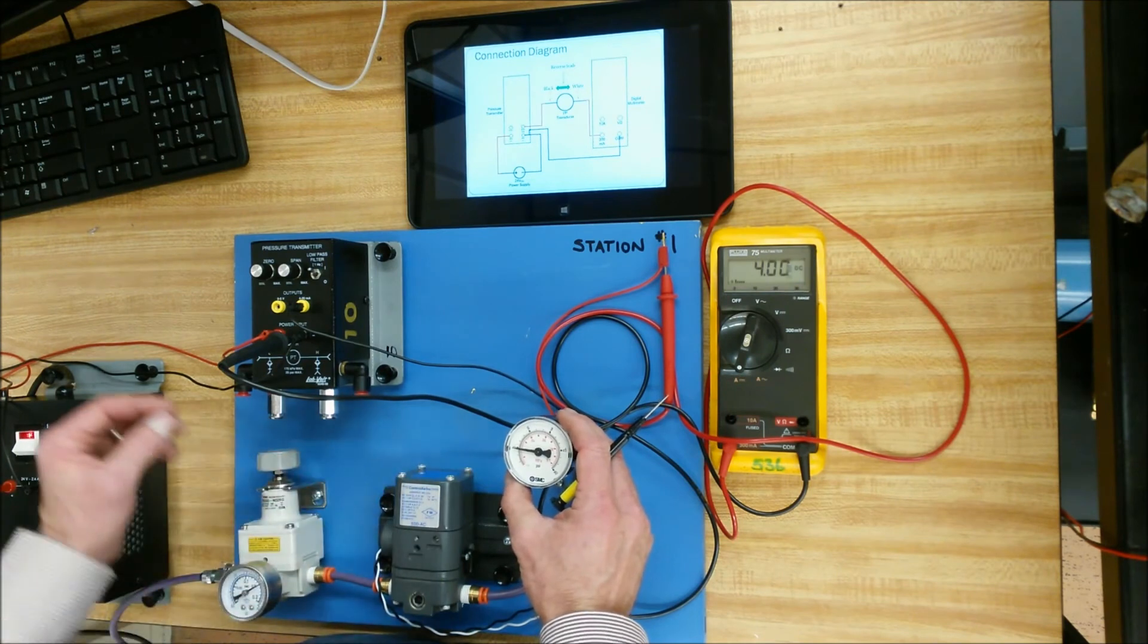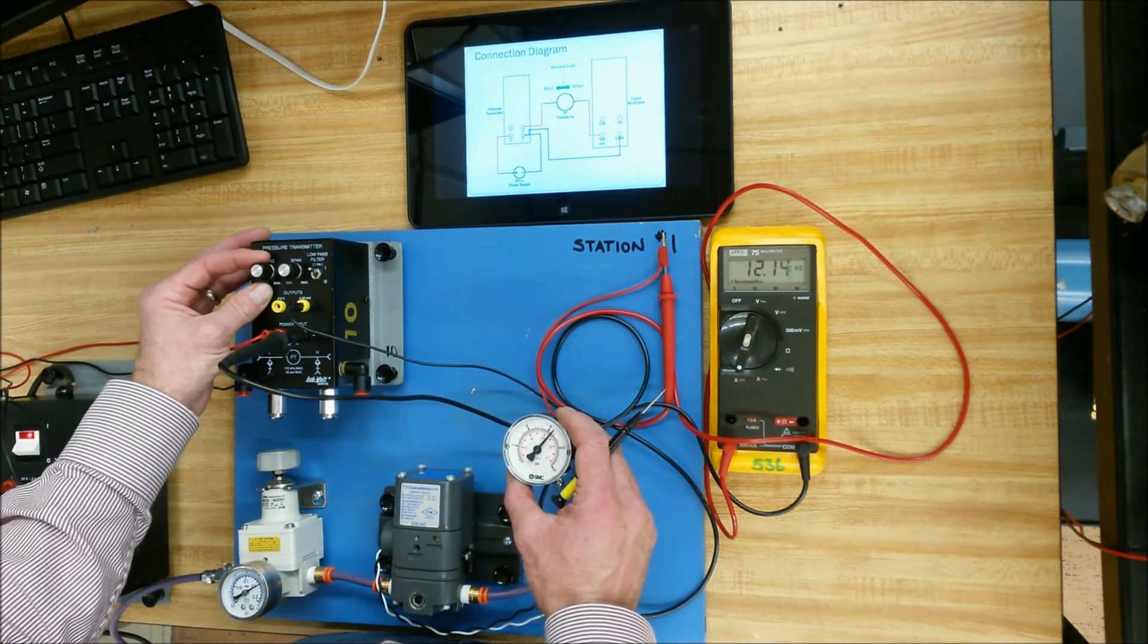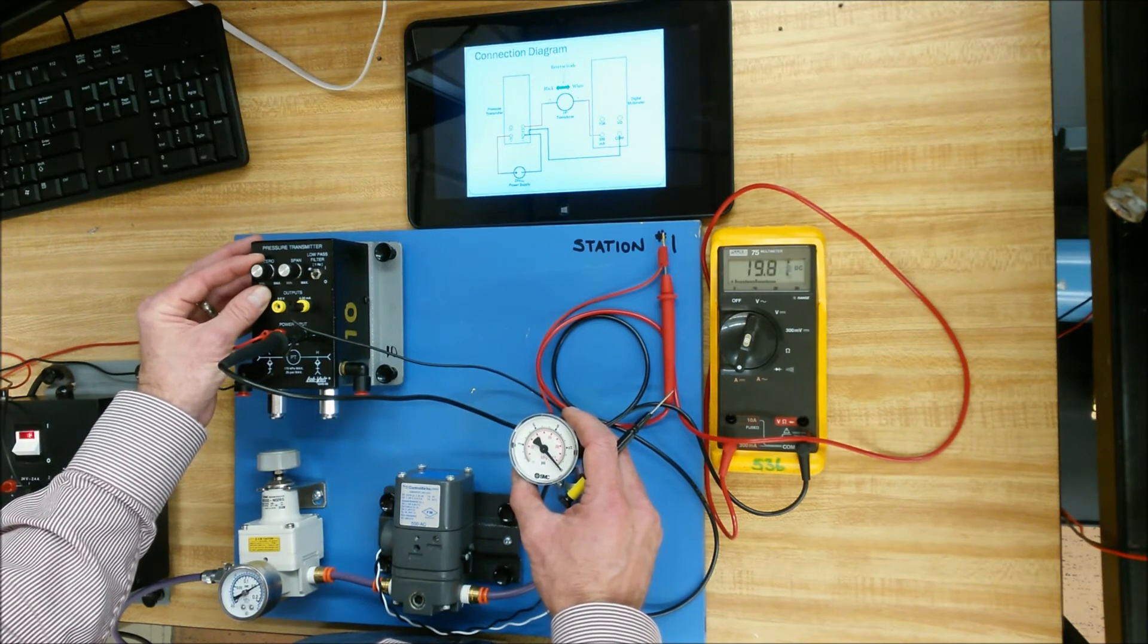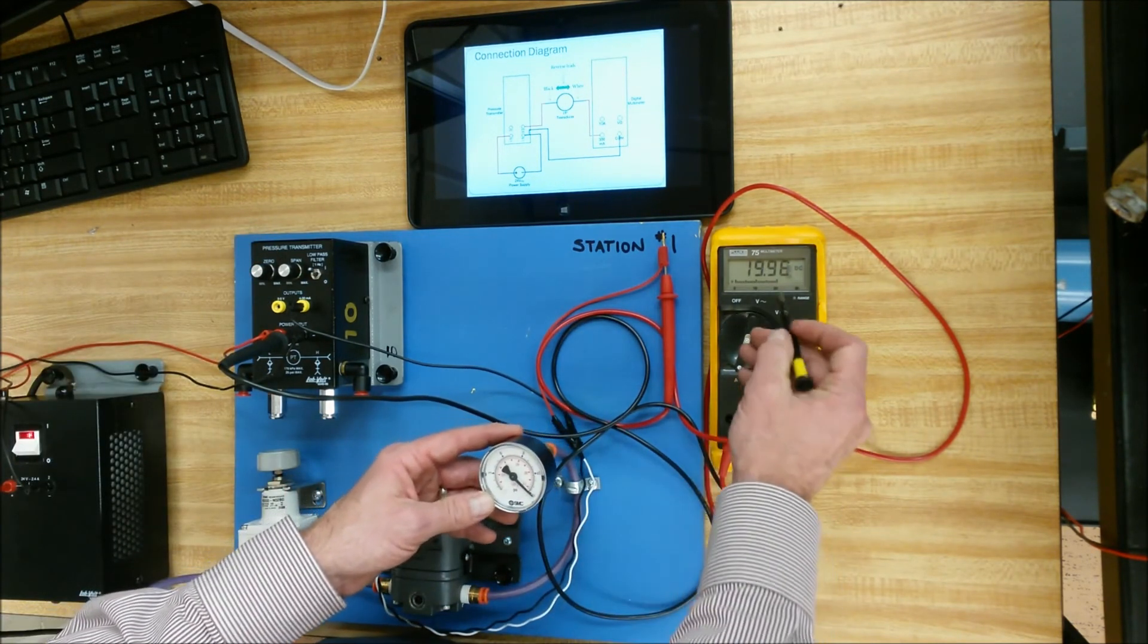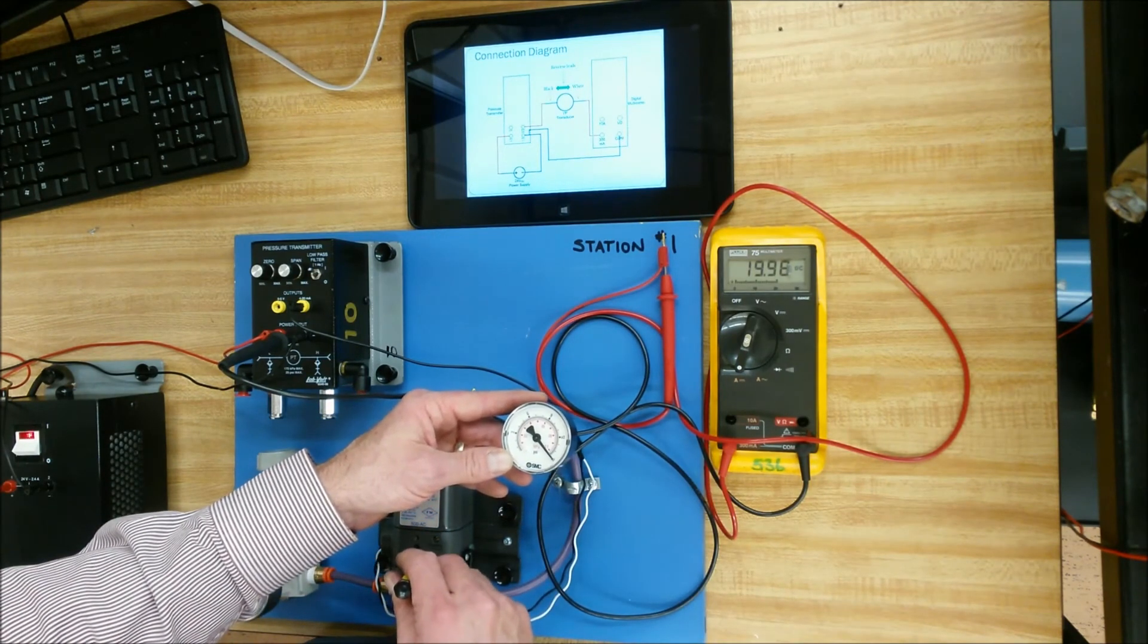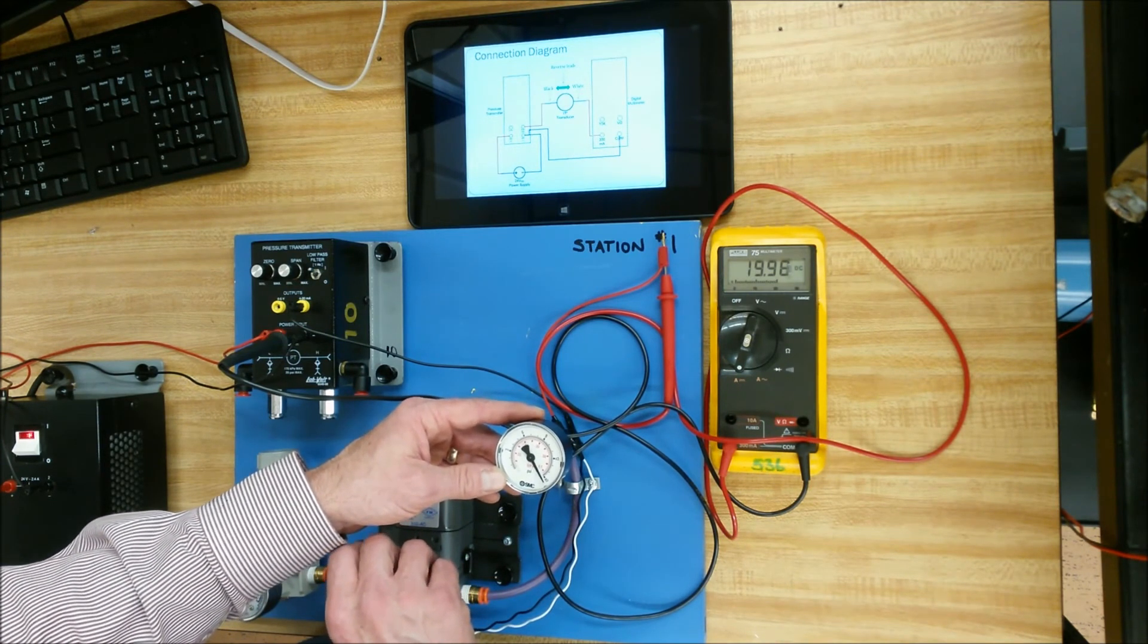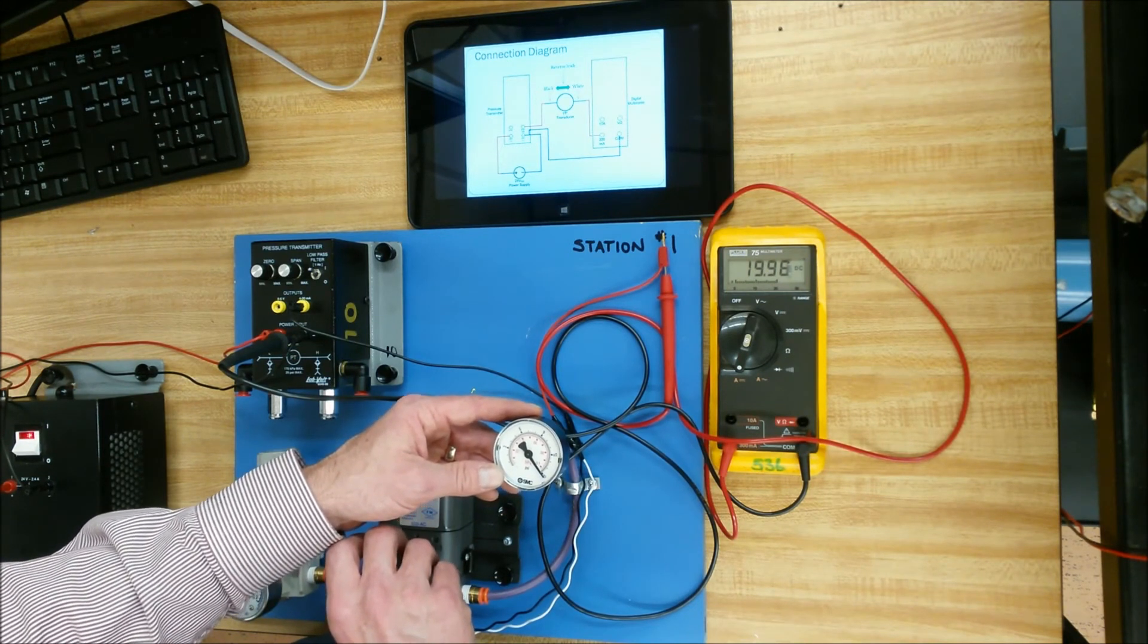Once the zero is set, then you can go set the high end of the range. So you're going to go up to 20 milliamps, and you're hoping that 20 milliamps is going to give you 15 psi out. Okay, so again, 20 milliamps, giving me 15 psi out. If that one was off, I could adjust the span. So if it was off just a touch, using the span potentiometer, readjust so that you have 20 milliamps giving you 15 psi.